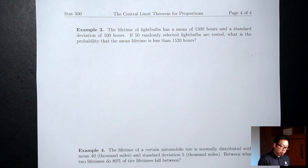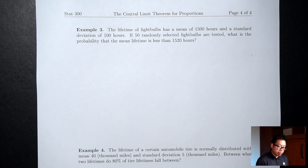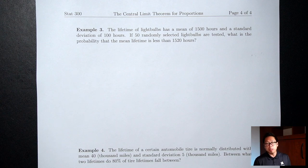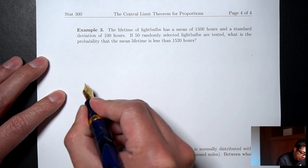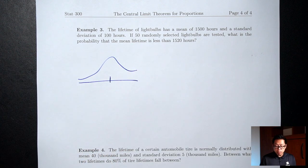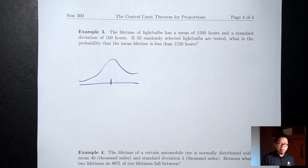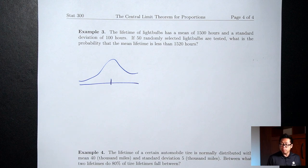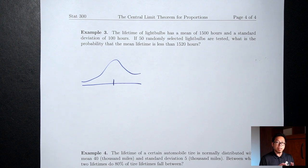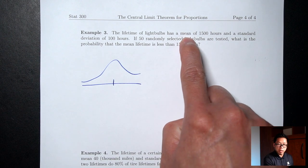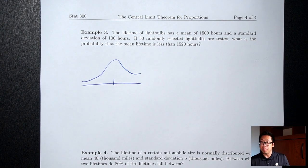Example 3: The lifetime of light bulbs has a mean of 1,500 hours and a standard deviation of 100 hours. If 50 randomly selected light bulbs are tested, what is the probability that the mean lifetime is less than 1,520 hours? Since the question contains the words 'mean' and 'standard deviation,' this is a mean question.